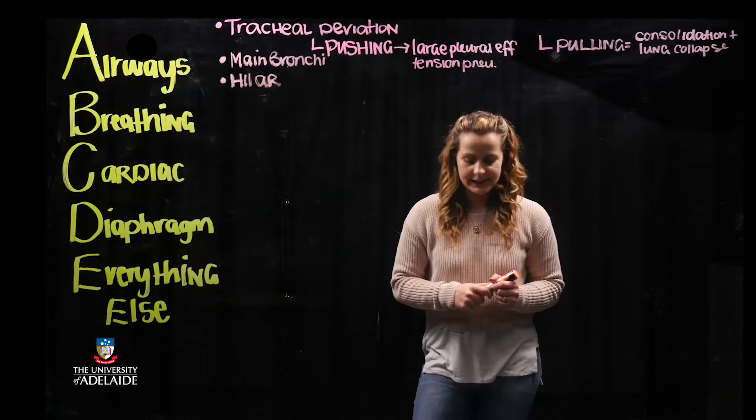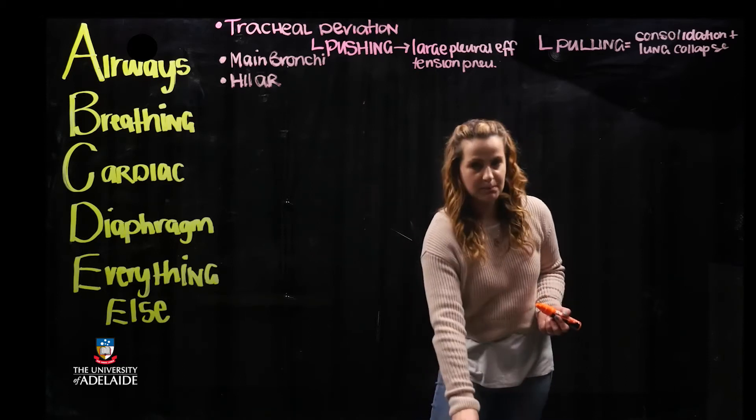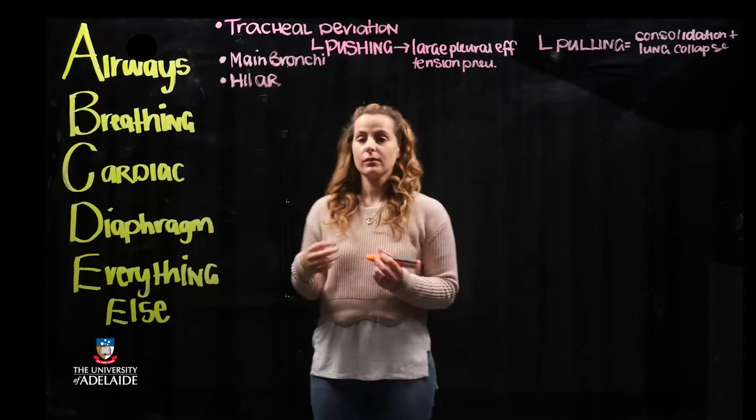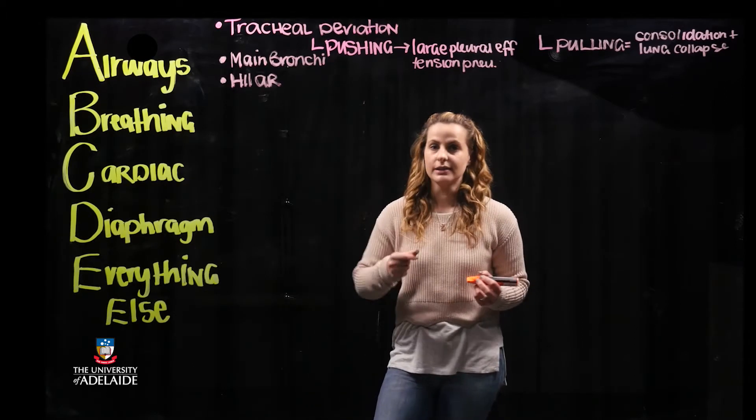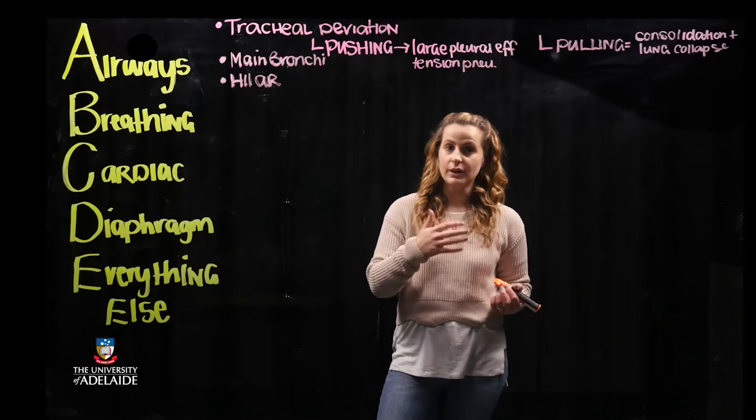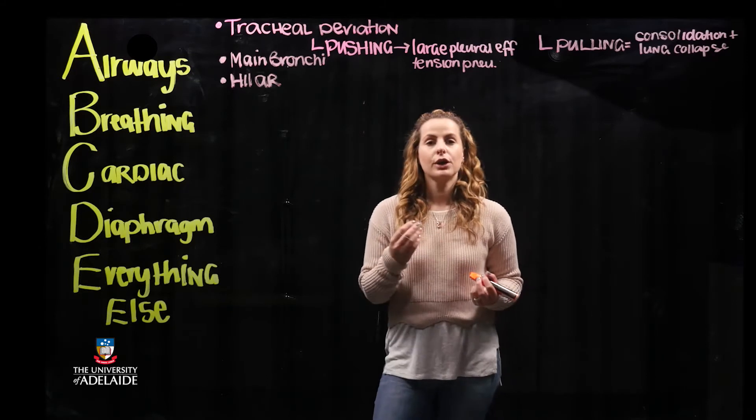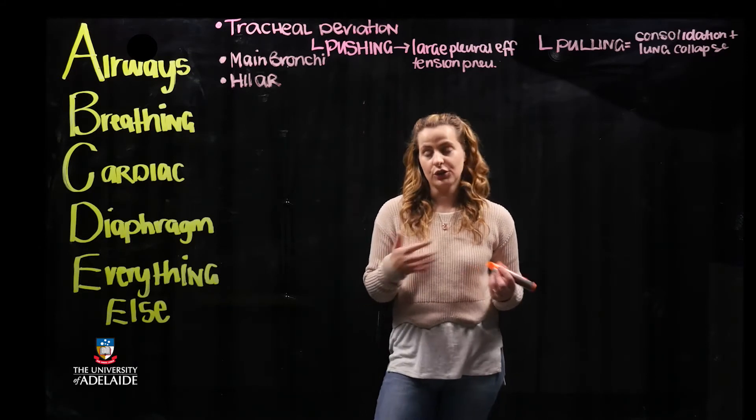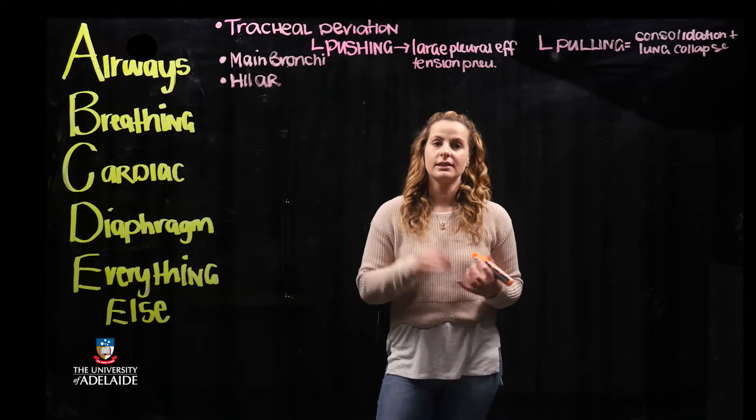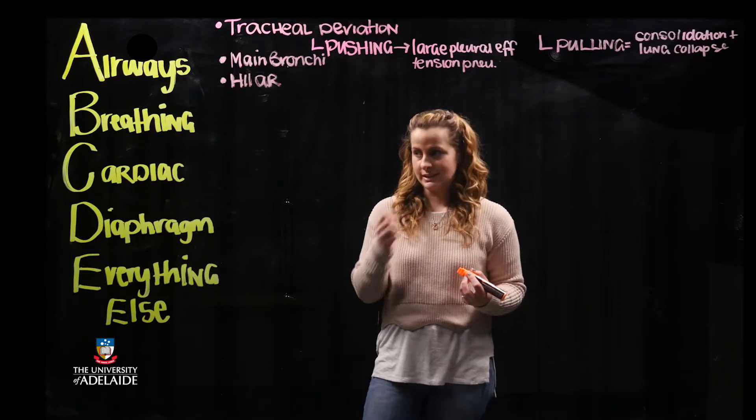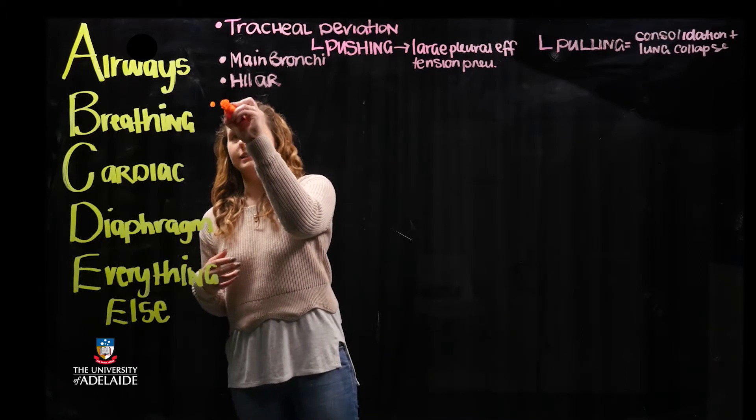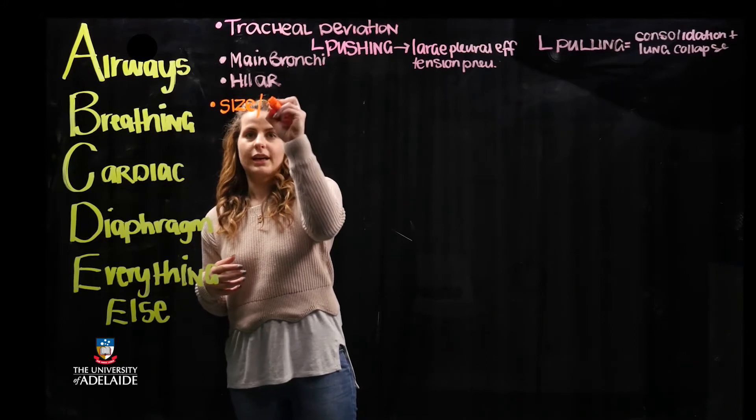Moving on to our second criteria, when we're looking at B we're examining the lungs and the pleural cavities. Specifically with our lungs, we divide each lung into three zonal layers—upper, middle, and lower—and we're going to assess for presence of any masses or nodules, but also to look at the general radiographic appearance. Both of the lungs should be similar in size and shape.